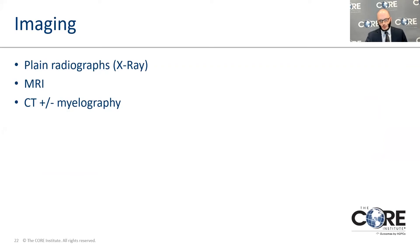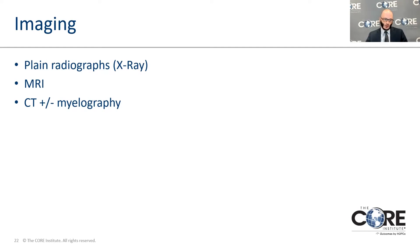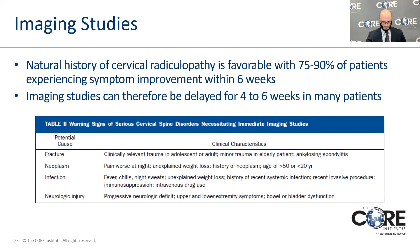When we talk about imaging for the spine, we usually start with x-rays. The most common imaging study to look at soft tissues, disc material, and nerves is the MRI. CT scans are great for looking at bones. We're doing myelograms less and less nowadays with the advent of MRIs. When people initially present with cervical radiculopathy, because the natural history is favorable, we don't necessarily need imaging studies within the first few weeks of symptom onset. Studies suggest 75% to 90% of people experience symptomatic improvement within six weeks.